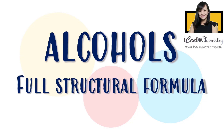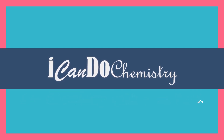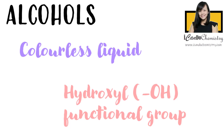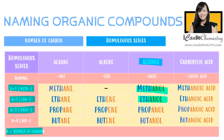In this video, we will focus on drawing structures of alcohols. Alcohols are colorless liquids with a hydroxyl functional group. The first member of the alcohol homologous series has one carbon and is called methanol. The second member has two carbons and we call it ethanol. The third member has three carbons and it is called propanol. The fourth has four carbons and we call it butanol.